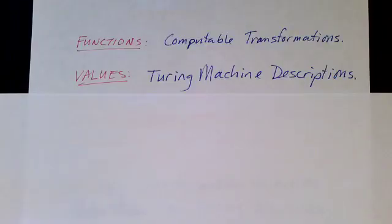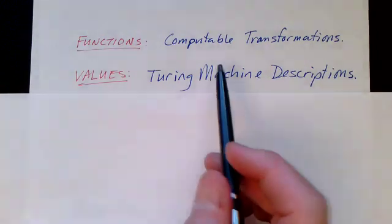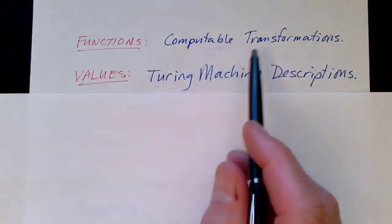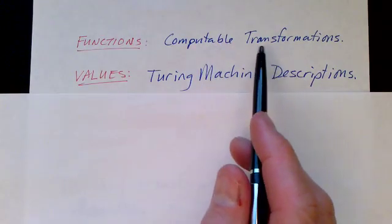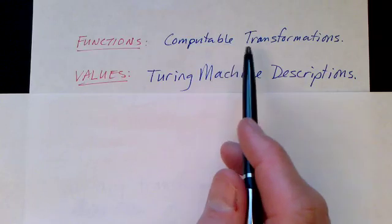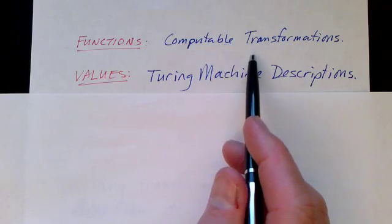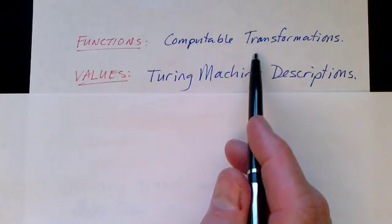In this discussion, we're assuming that the functions are computable functions or transformations. A transformation is a function that stays in the same space where the domain and the range are the same set.